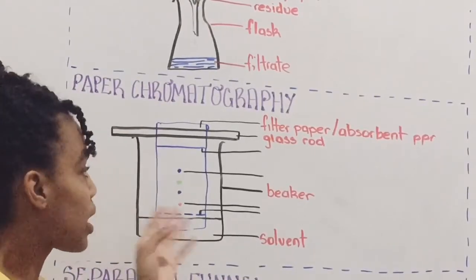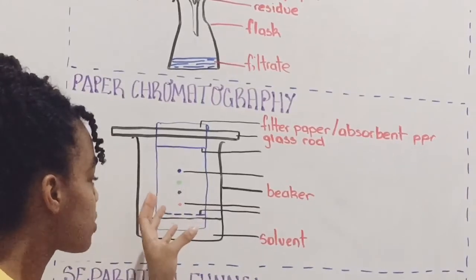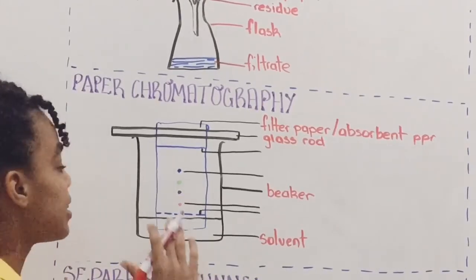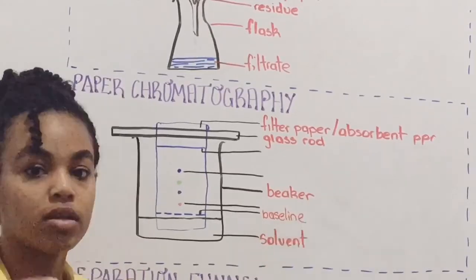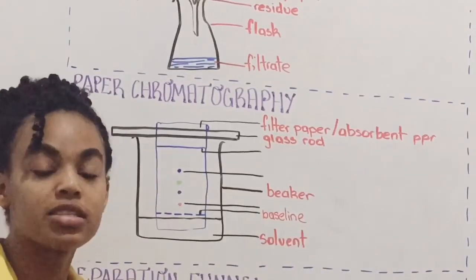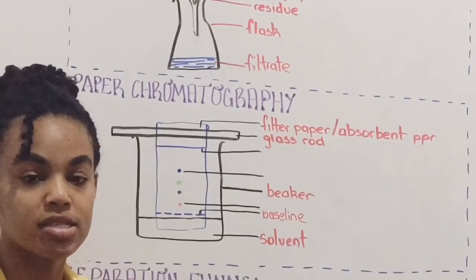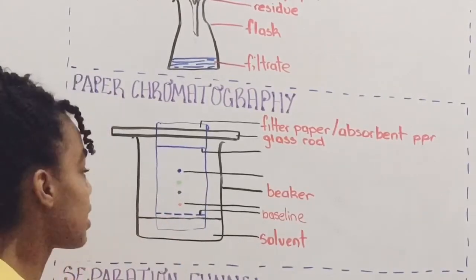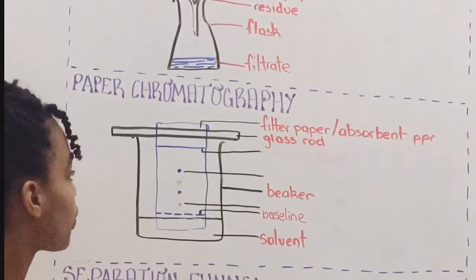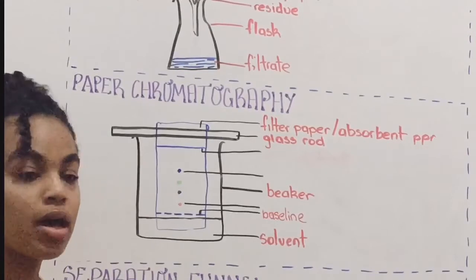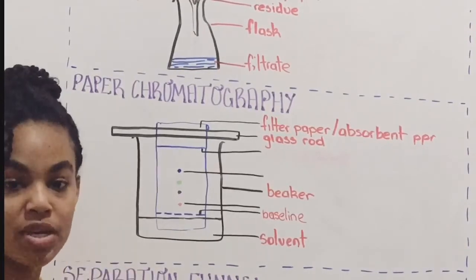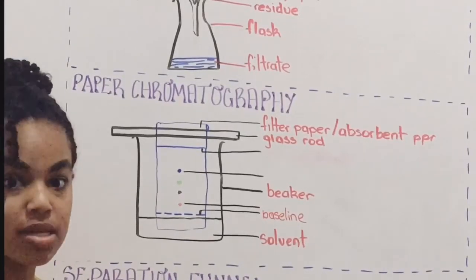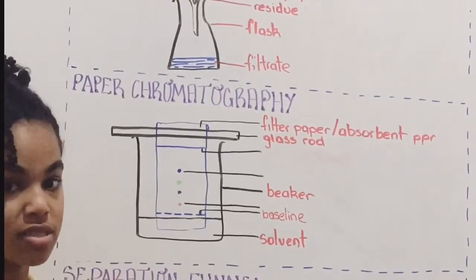Before you put the absorbent paper in the experiment, you're going to draw a line a few centimeters from the bottom of the paper. This line is going to be your baseline. The purpose of the baseline is the starting point of the ink that you're trying to separate the different solutes from. So you're going to dot your ink — put a drop of ink on this baseline. During the experiment, you're going to dip the absorbent paper and make sure that the bottom of the paper is in the solvent, but make sure that the baseline is not touching the solvent. The baseline should be a little bit above the top level of the solvent.